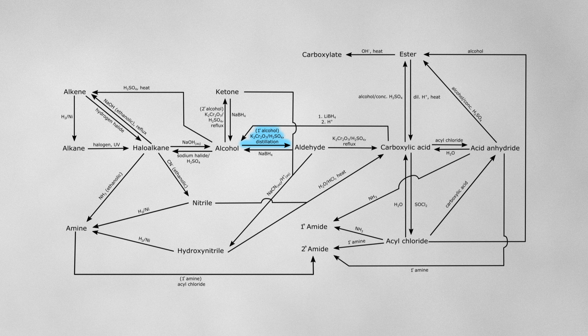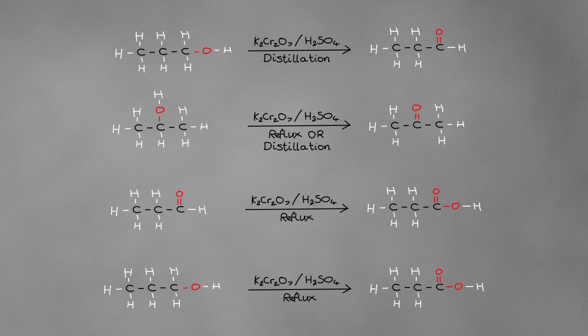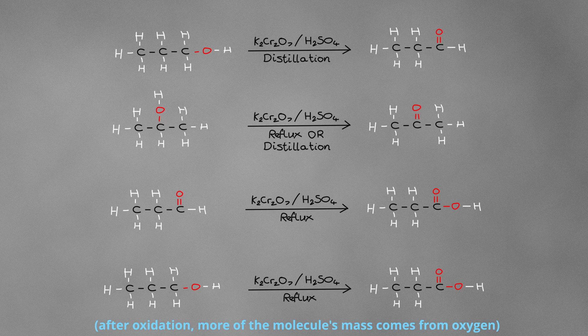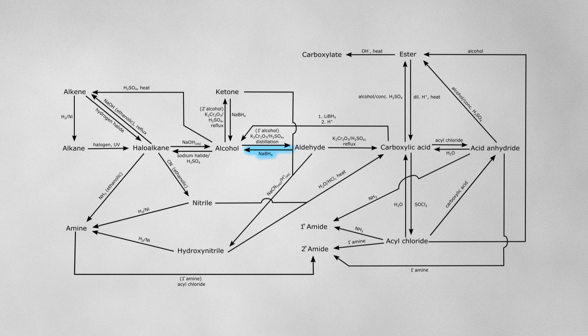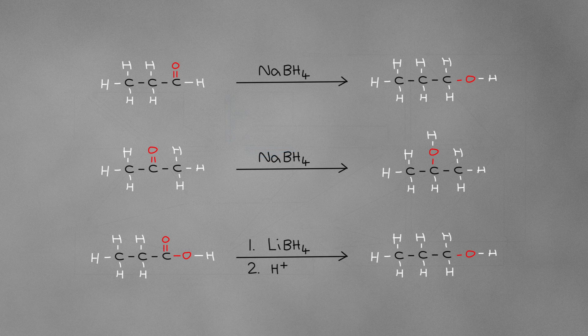The reaction to go from a primary alcohol to an aldehyde uses the same reagent as the reaction to go from a secondary alcohol to a ketone, and the reaction to go from either a primary alcohol or an aldehyde to a carboxylic acid. For all of these reactions we use the oxidizing agent acidified potassium dichromate. This is because they're all the same reaction — oxidation — which for simplicity's sake we can regard as a reaction where we're adding oxygen to the molecule. Similarly, to go from an aldehyde or a ketone back to an alcohol, they both use the same reagent which is sodium borohydride, because they're both the same reaction again — reduction — which can be defined as a reaction where we're removing oxygen from the molecule.